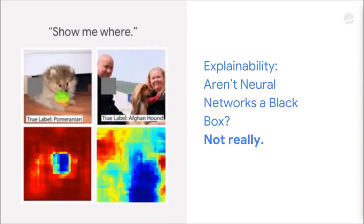Here you can see a picture of a Pomeranian, and the heat map shows that there's something in the face of the Pomeranian that makes it look Pomeranian-y. And on the left, right here, you have an Afghan hound and the network is highlighting the Afghan hound.